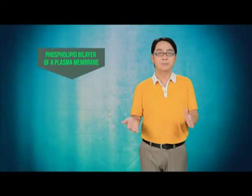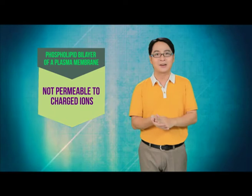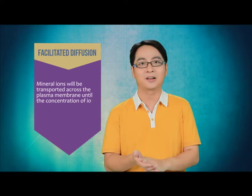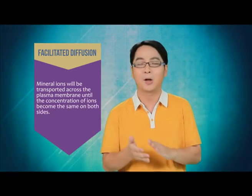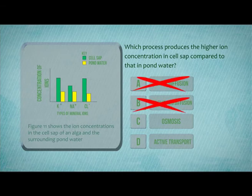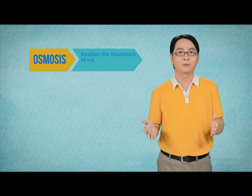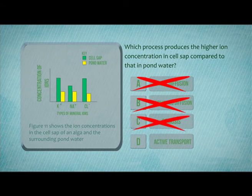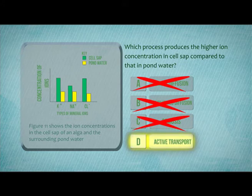The phospholipid bilayer of a plasma membrane is not permeable to charged ions, so mineral ions cannot enter the cell by simple diffusion. If facilitated diffusion is involved, the mineral ions will be transported across the plasma membrane until the concentration of ions becomes the same on both sides, so options A and B are incorrect. Osmosis only involves the movement of water molecules and not mineral ions, therefore option C is also incorrect. Therefore, the correct answer is D, active transport.